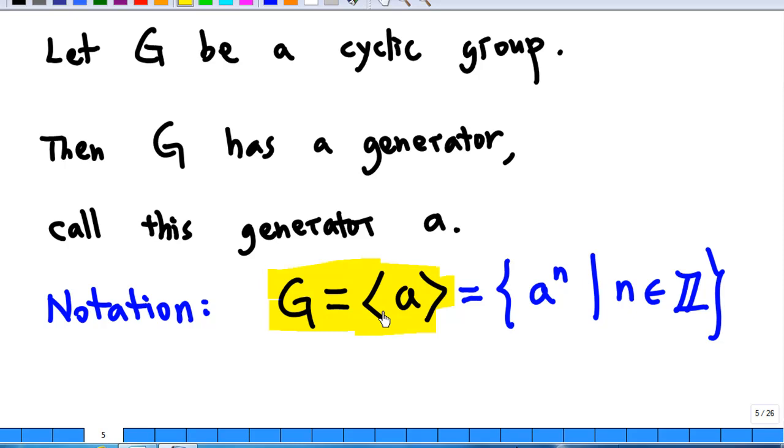In our notation, we write G equals bracket a, which means that G consists of a power n, where n consists of all integers.